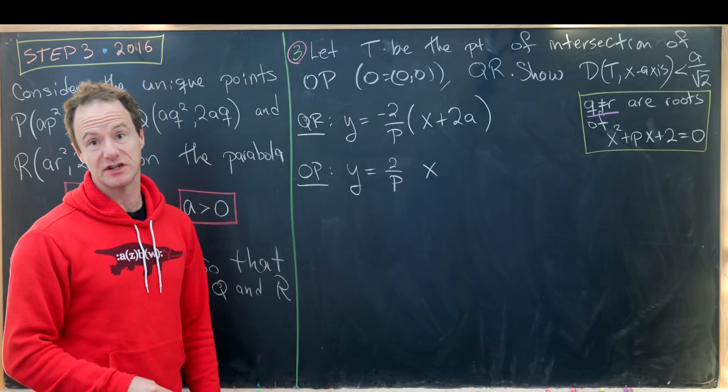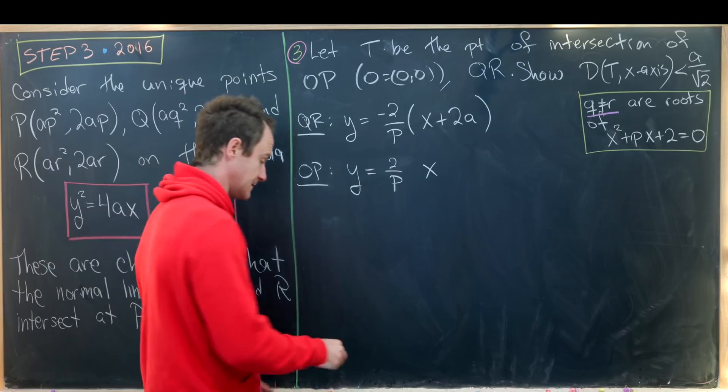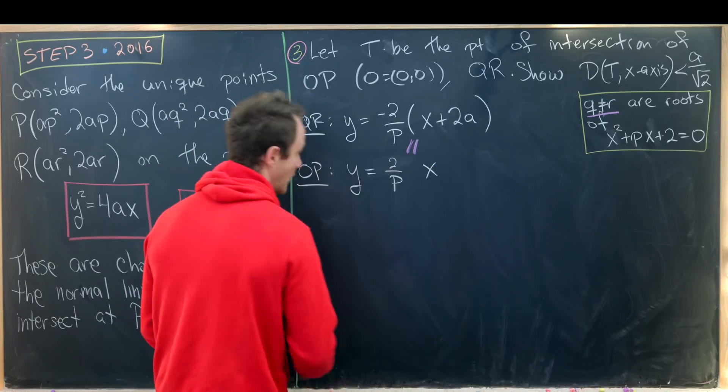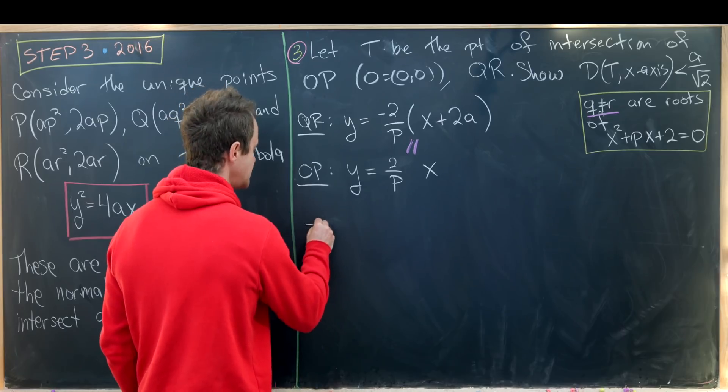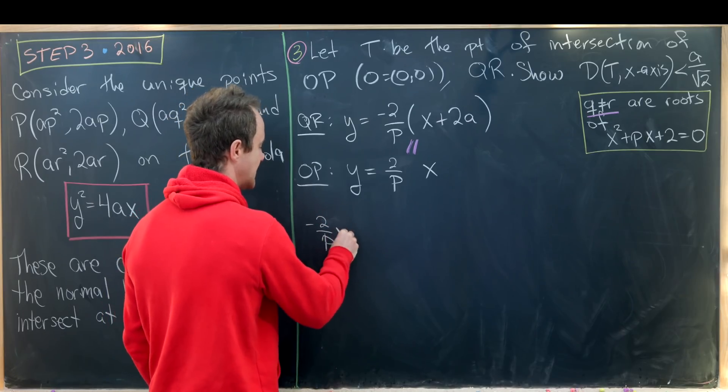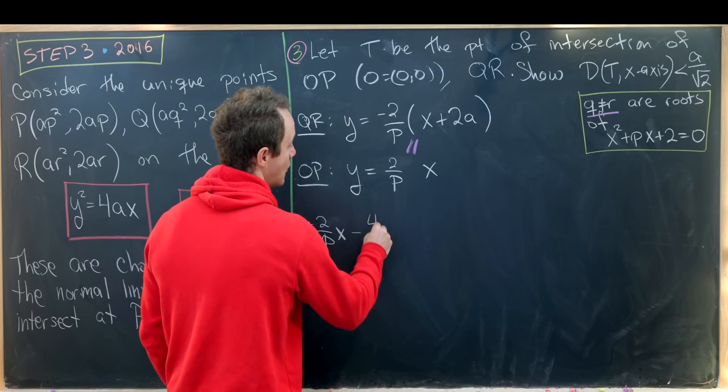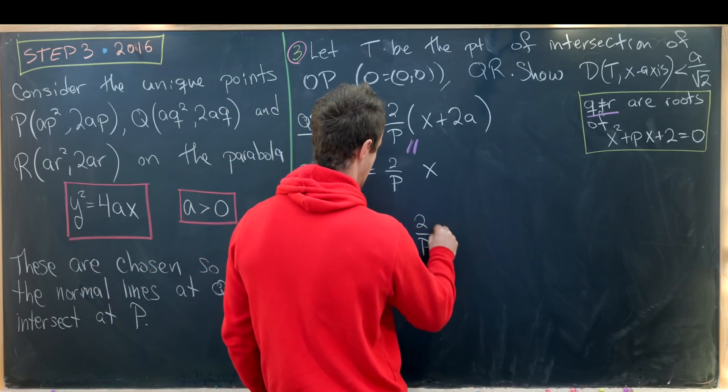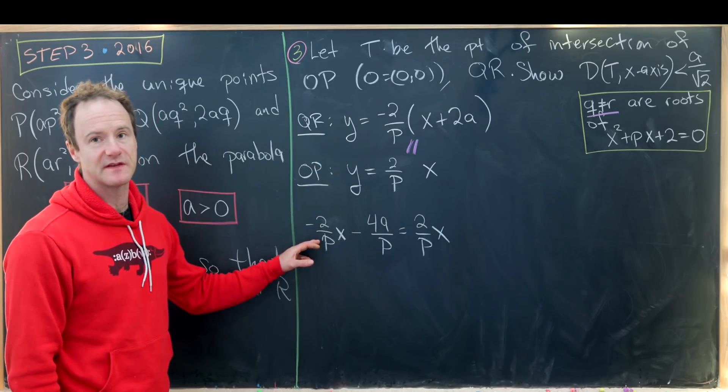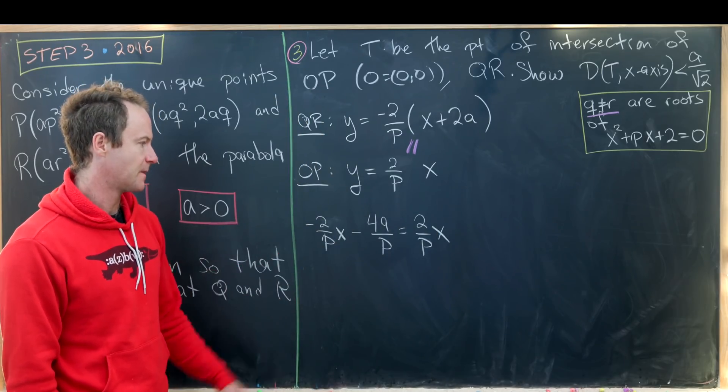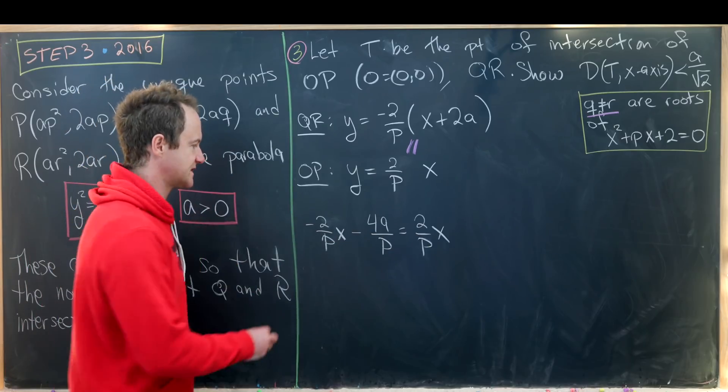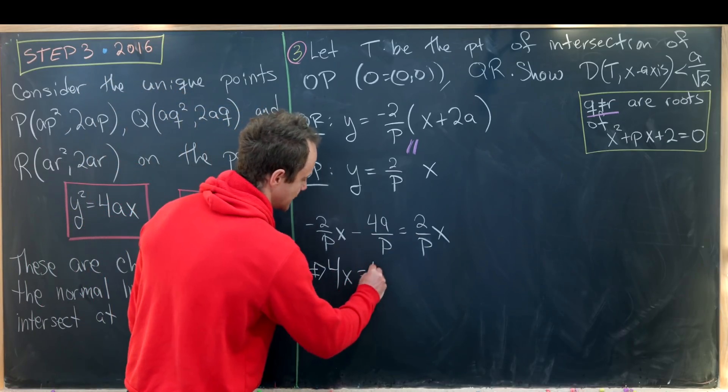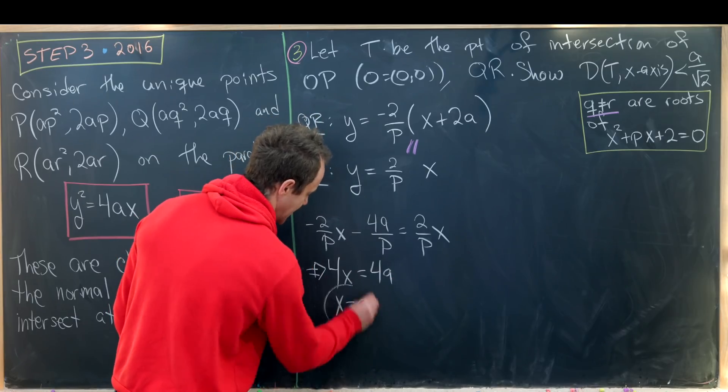Now that sets up an equation that we should be able to solve pretty easily. And that equation is just this guy equals this guy. We'll have (-2/P)X - 4A/P = 2X/P. But now let's multiply this entire thing by P just to kill the denominator. And then move all of this to one side of the equation. And that very quickly leaves us with the equation 4X = 4A which means X = A.